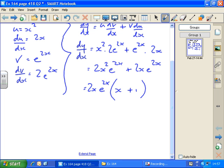To check this is correct, multiply it back out again. x times 2x e to the 2x gives me back 2x squared e to the 2x, and 1 times 2x e to the 2x gives me back 2x e to the 2x.